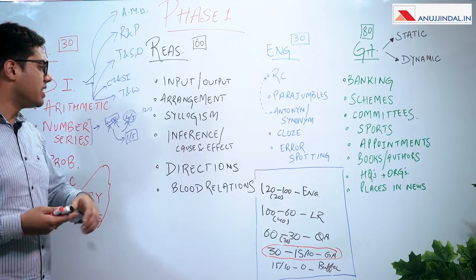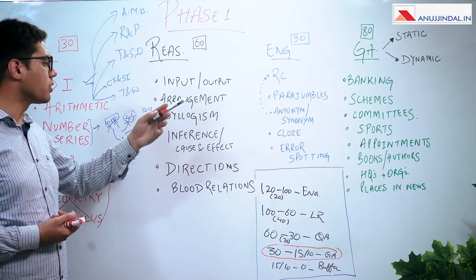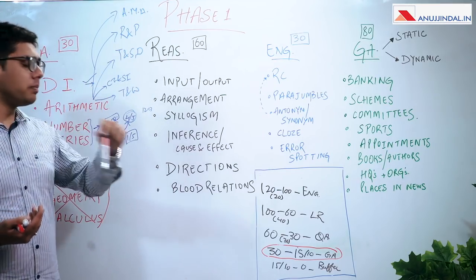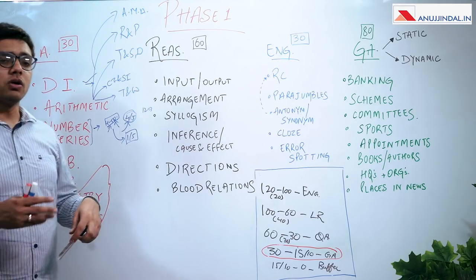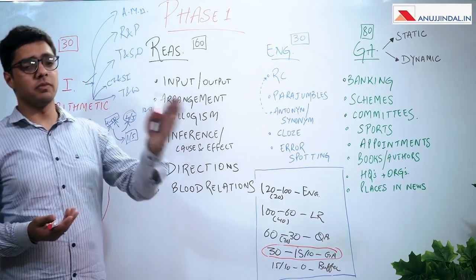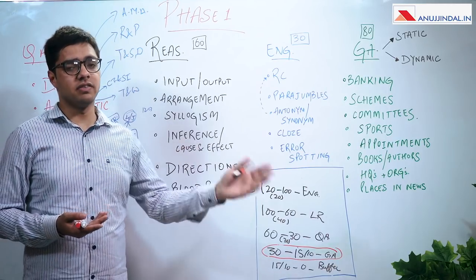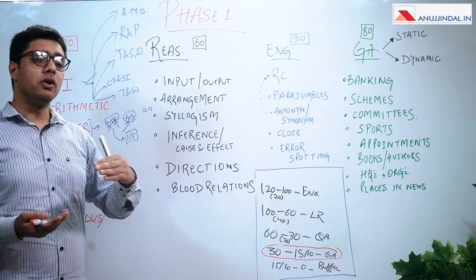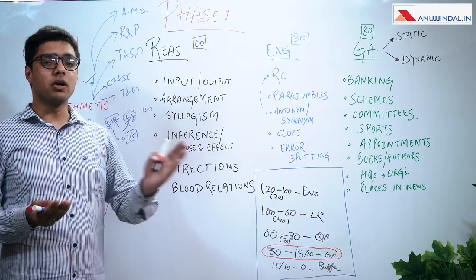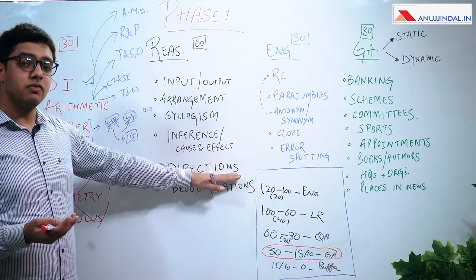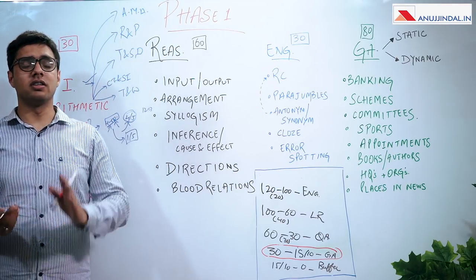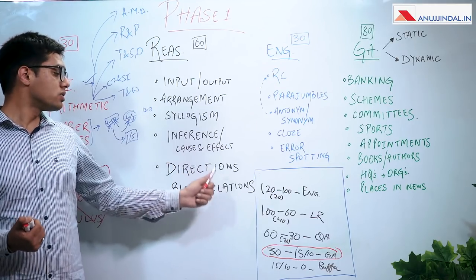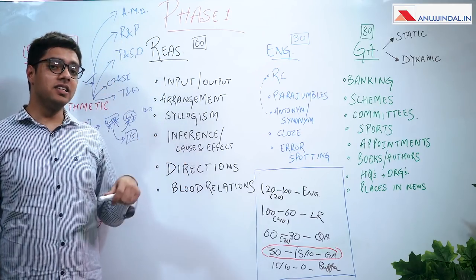Now let's come to reasoning. As most of you know, it has input-output, coding-decoding questions, arrangements including seating patterns — linear, vertical, and circular table arrangements. It also has questions on mapping seven people with seven professions, seven cities, and seven T-shirt colors. There are syllogism questions, inferences from statements, cause and effect relationships, direction sense questions — whose complexity has increased significantly — and blood relations questions. The level of complexity means you cannot take anything for granted; you have to practice well.